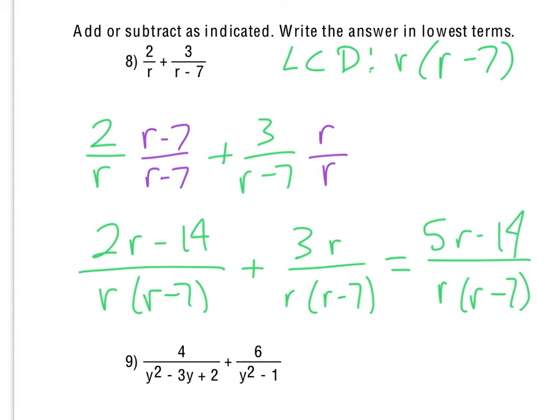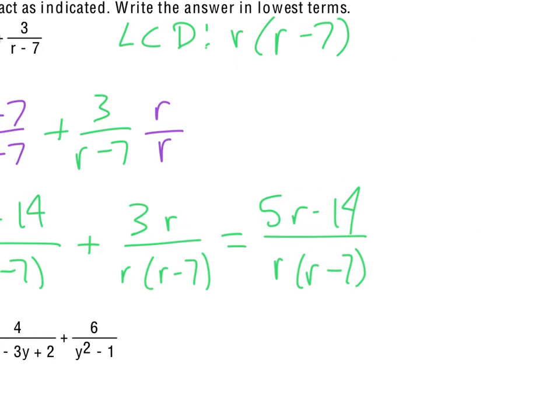Now you do want to make sure that you factor that numerator if possible. However, this 5r minus 14 does not factor. Again, the reason we'd want to do that is just in case it happens to have either an r or an r minus 7 as a factor. You would need to cancel that out to express that in lowest terms.